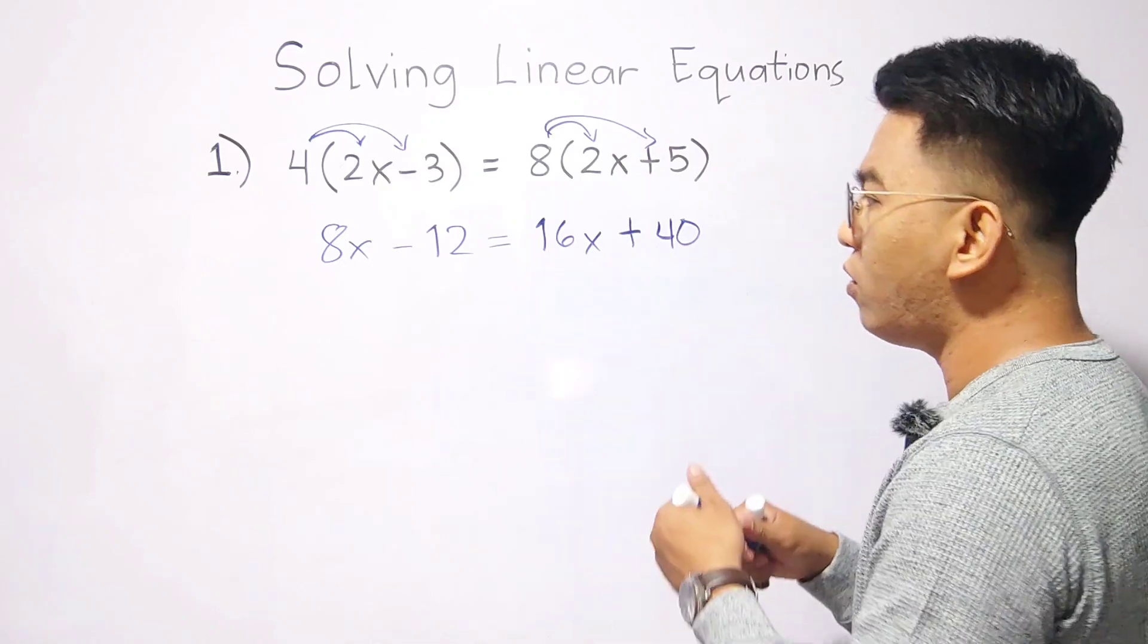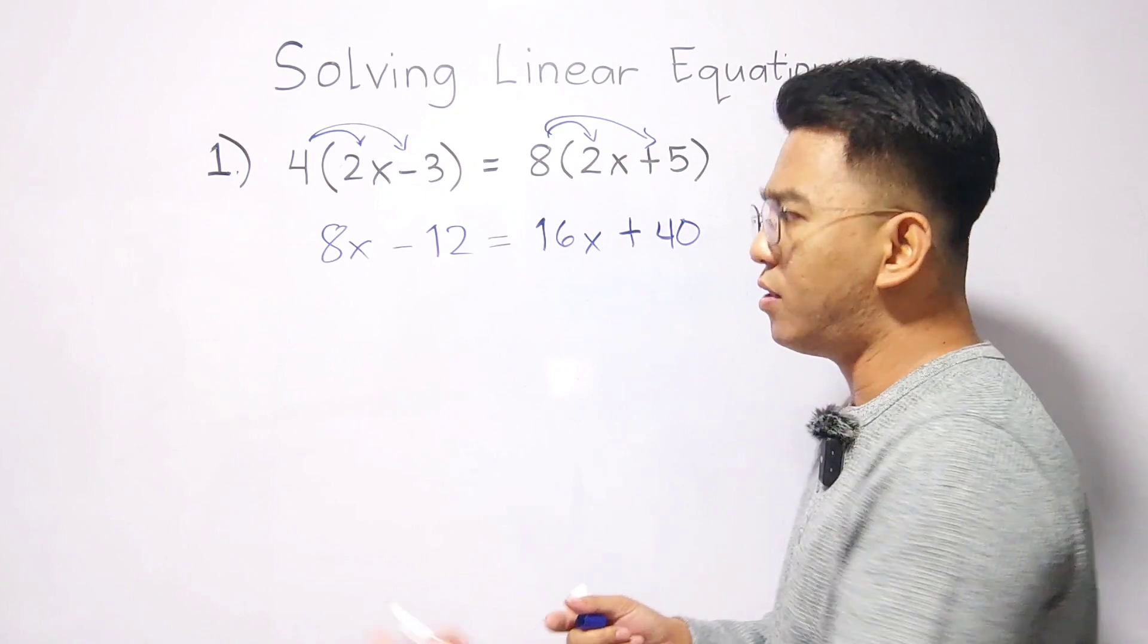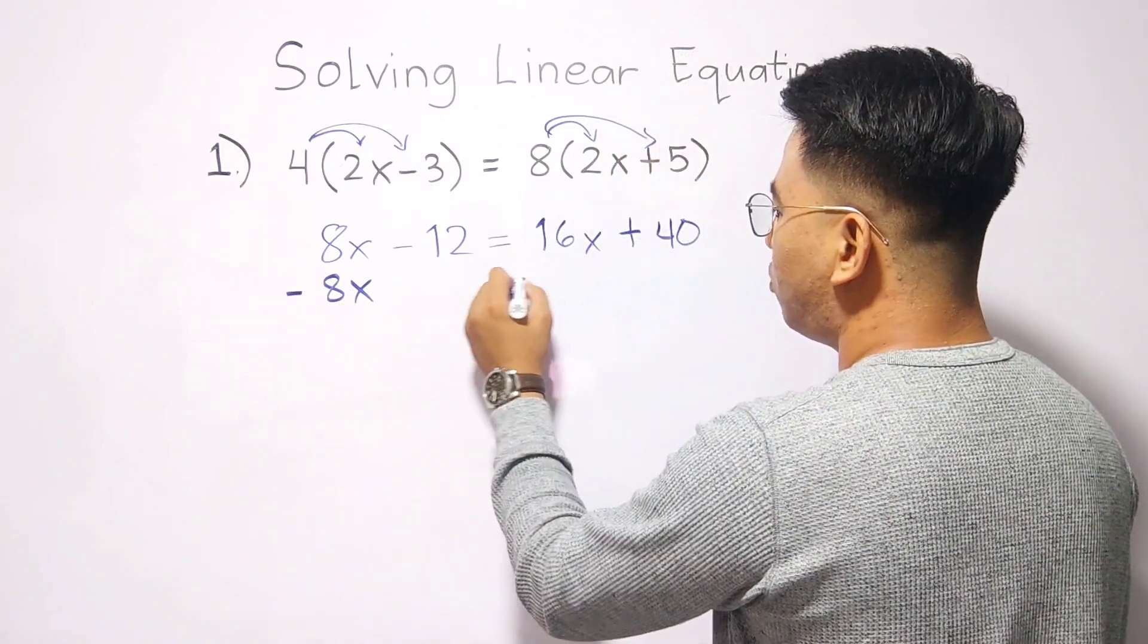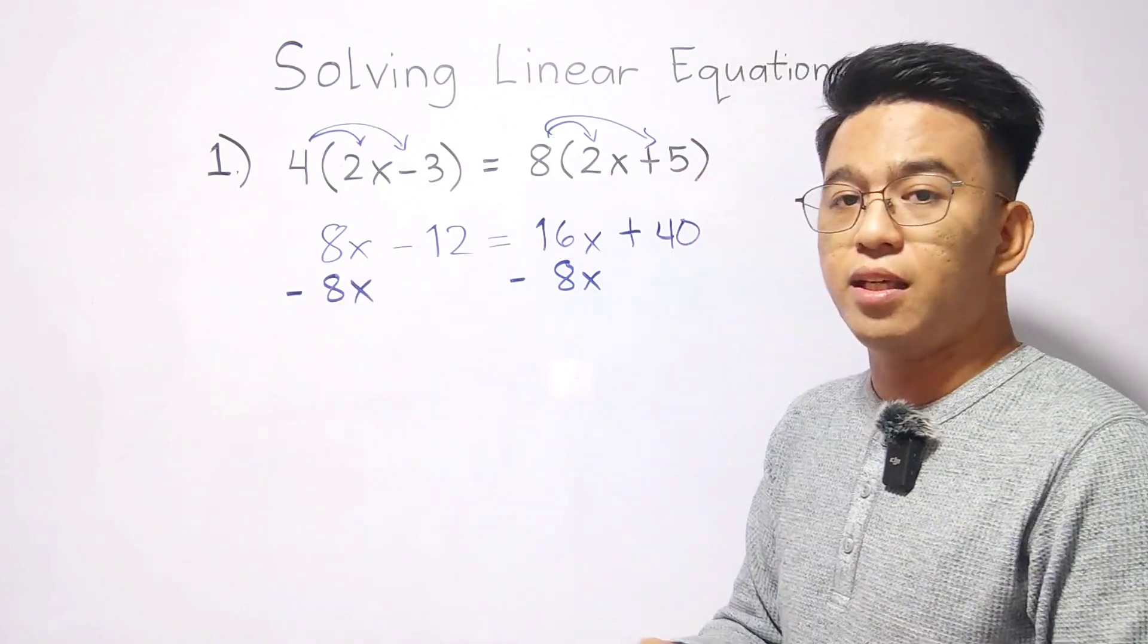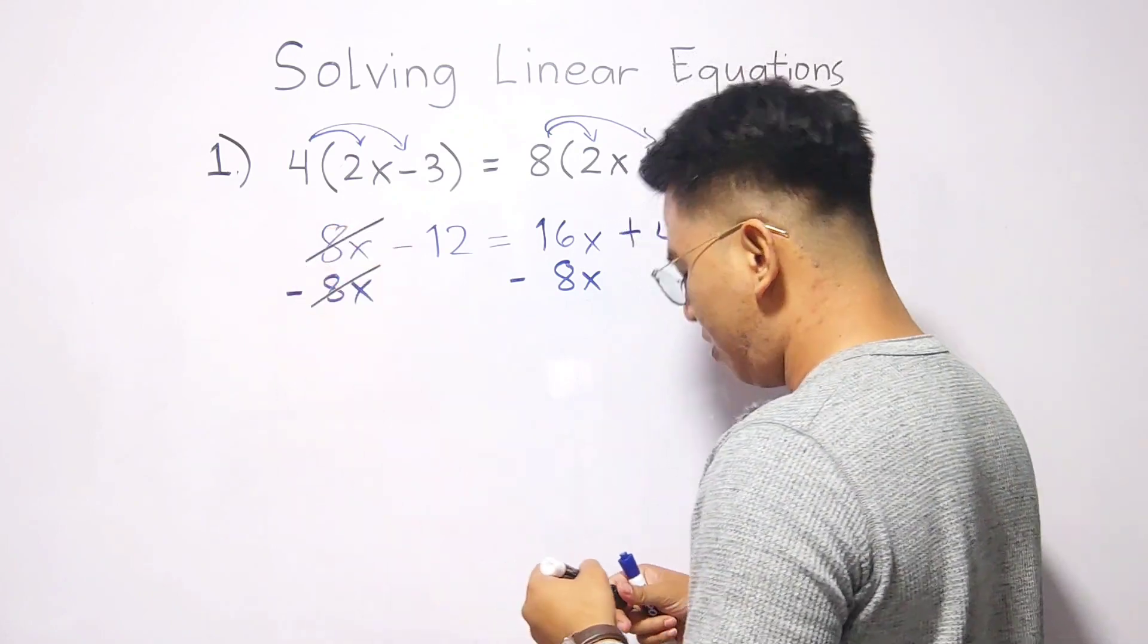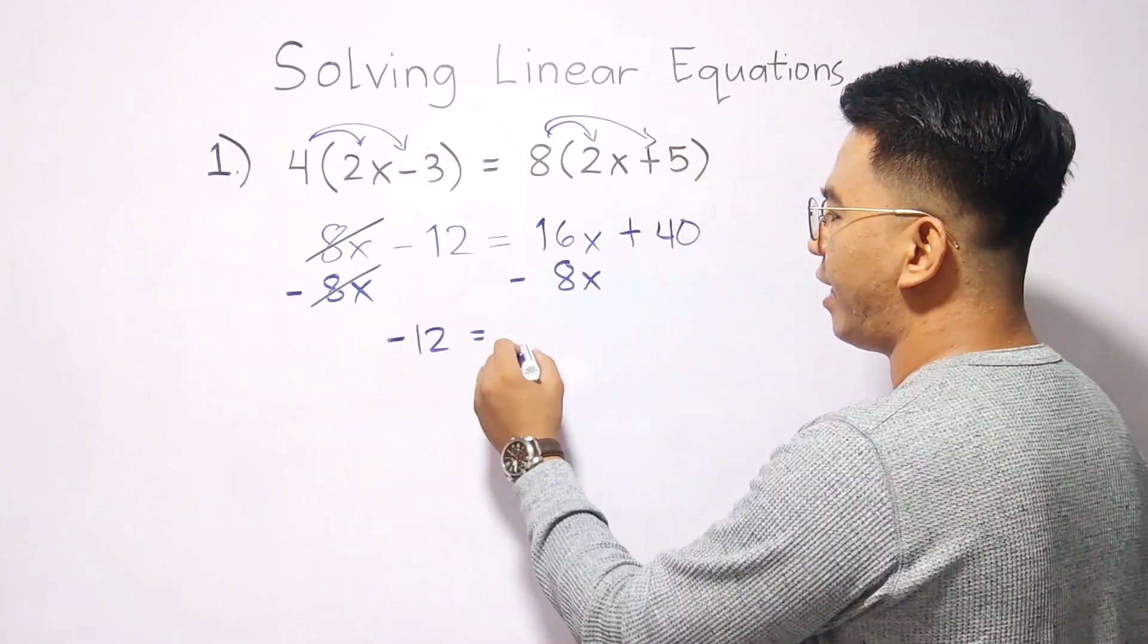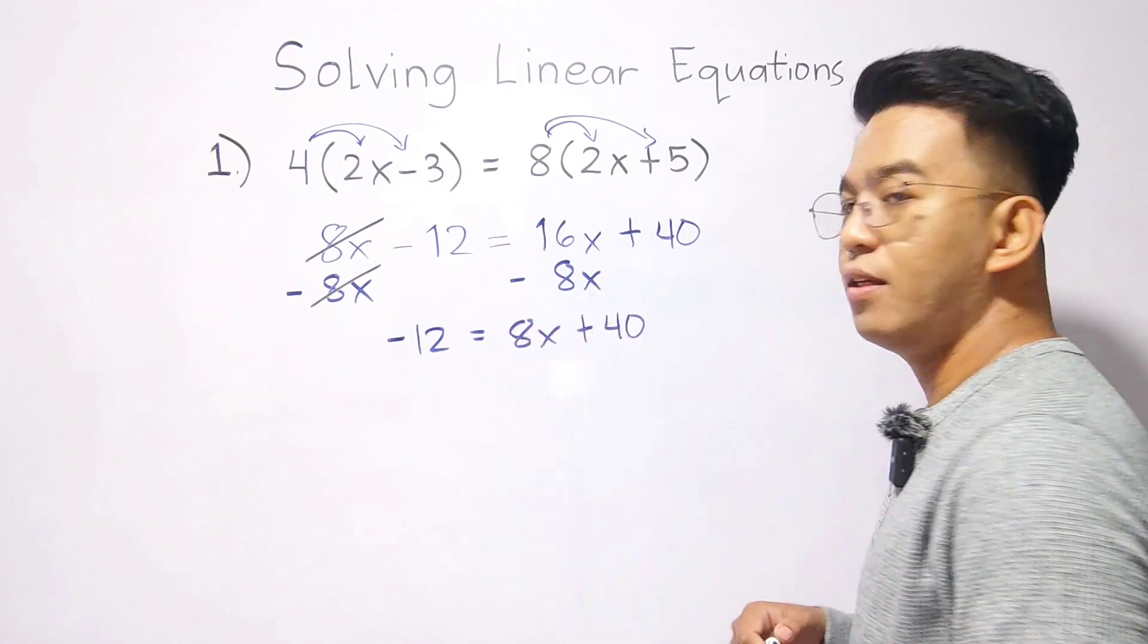So, what we need to do here, to remove this 8x, since this is positive, we will add its additive inverse. Or simply, subtract both sides of the equation by 8x. In this case, guys, when you have 8x minus 8x, this will become 0. Or you can simply cancel this out. Now, what we have here is negative 12 is equal to 16x minus 8x. This is 8x. And then, plus 40.